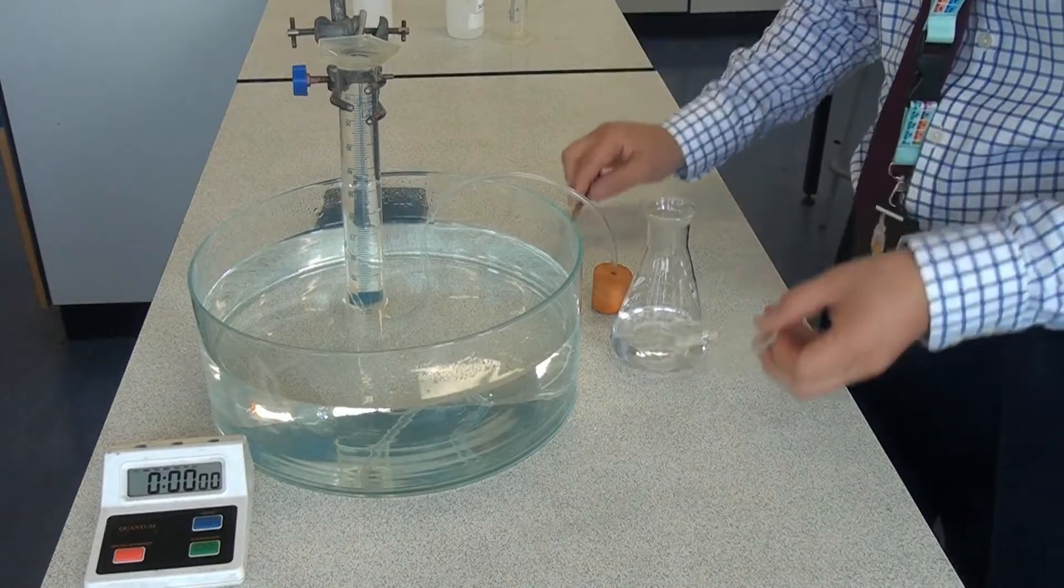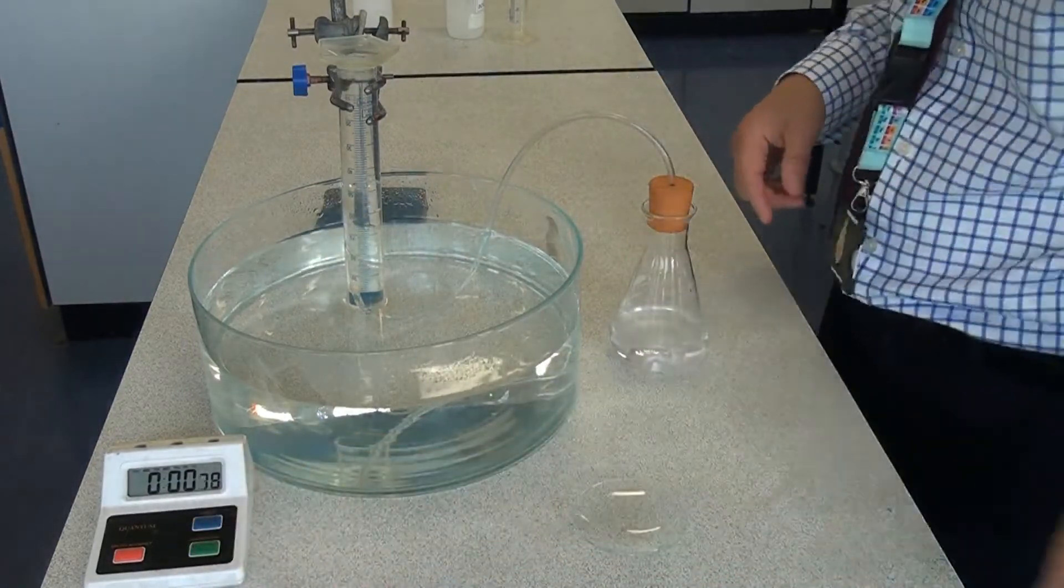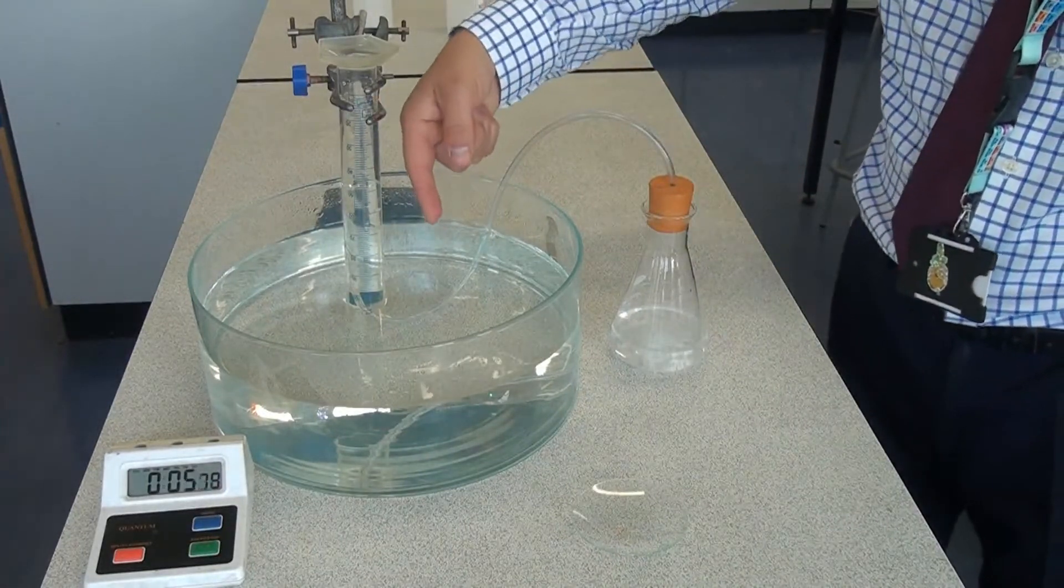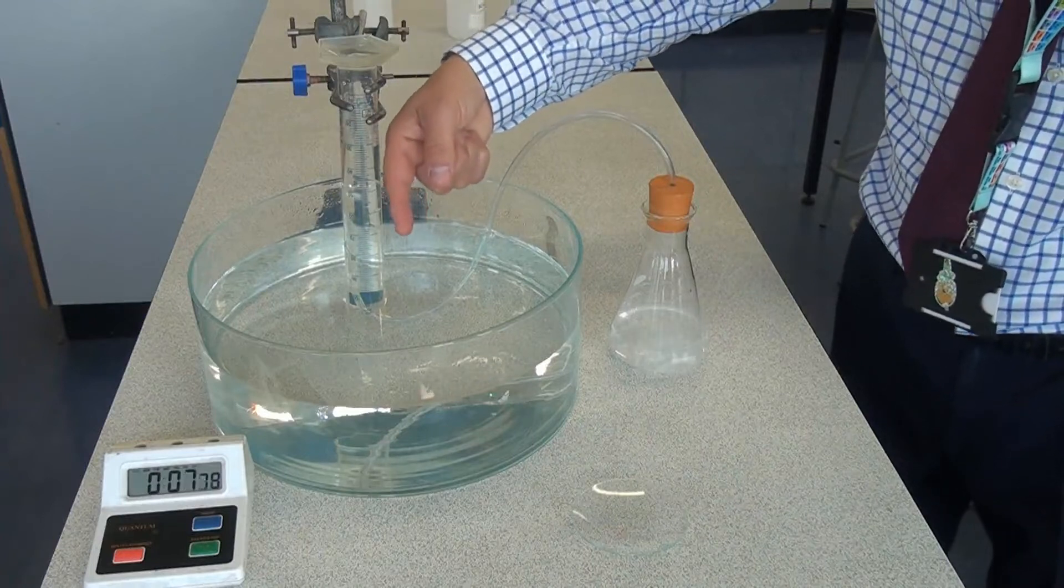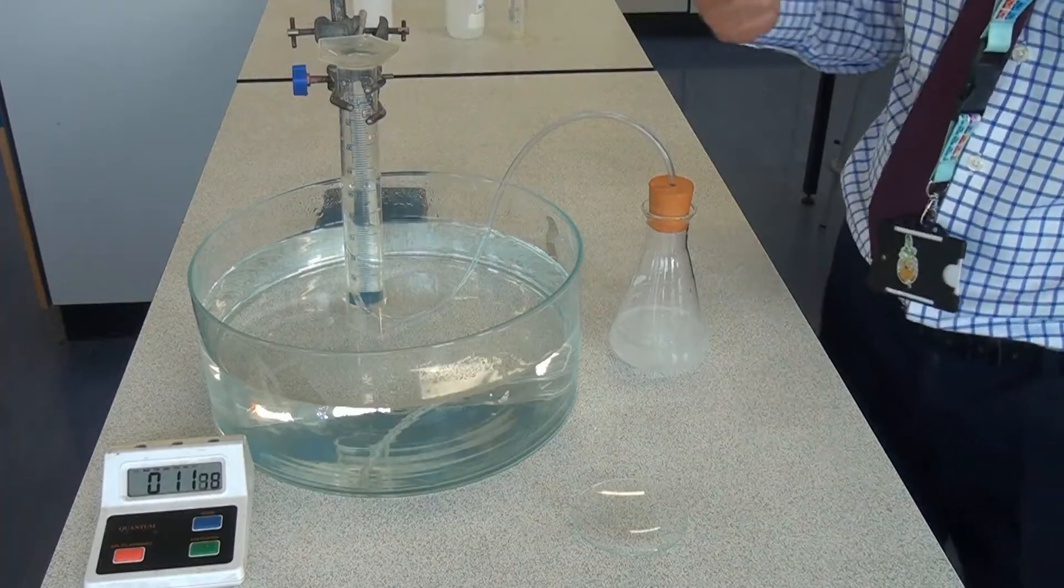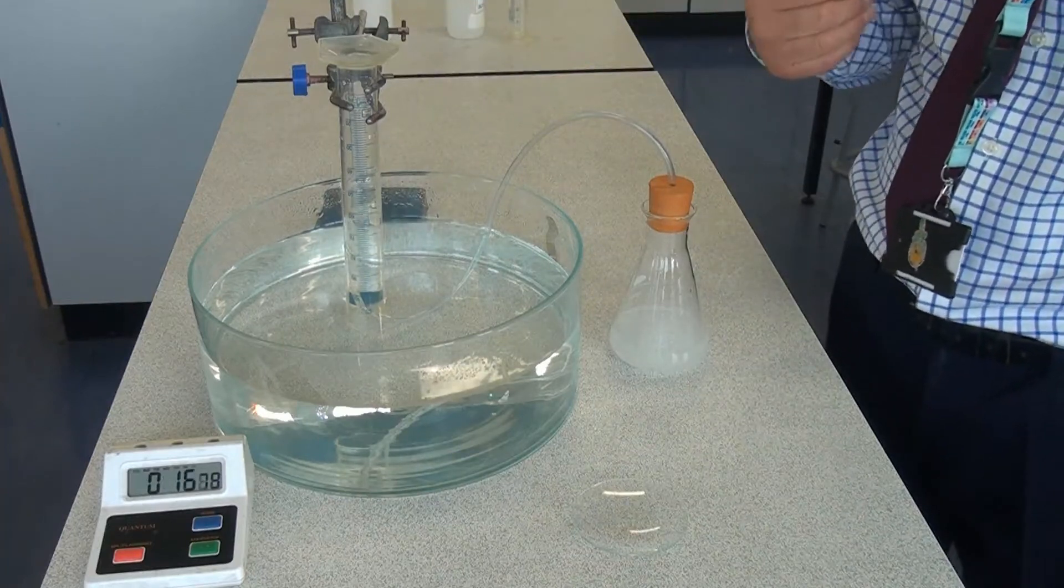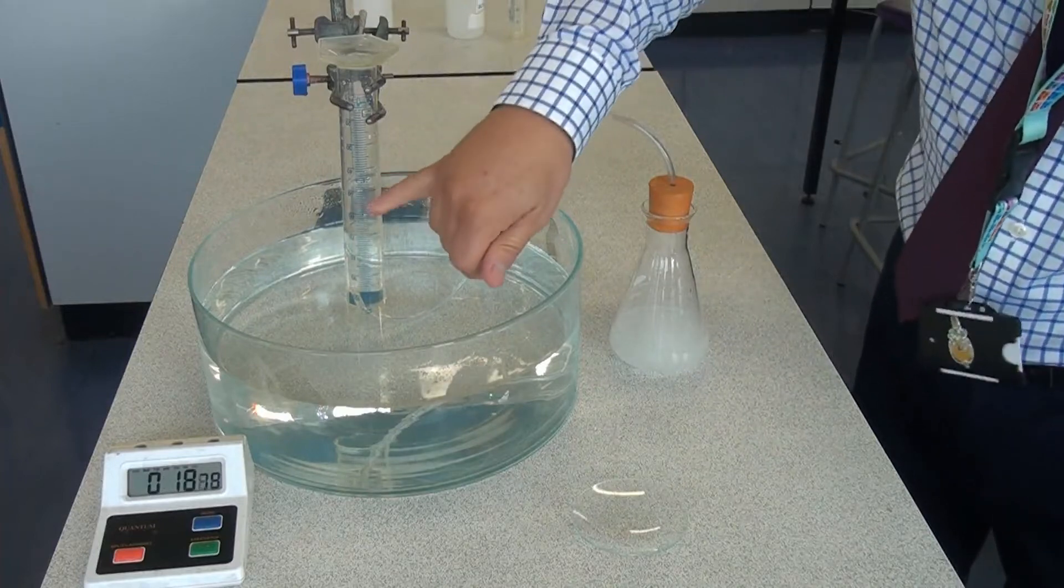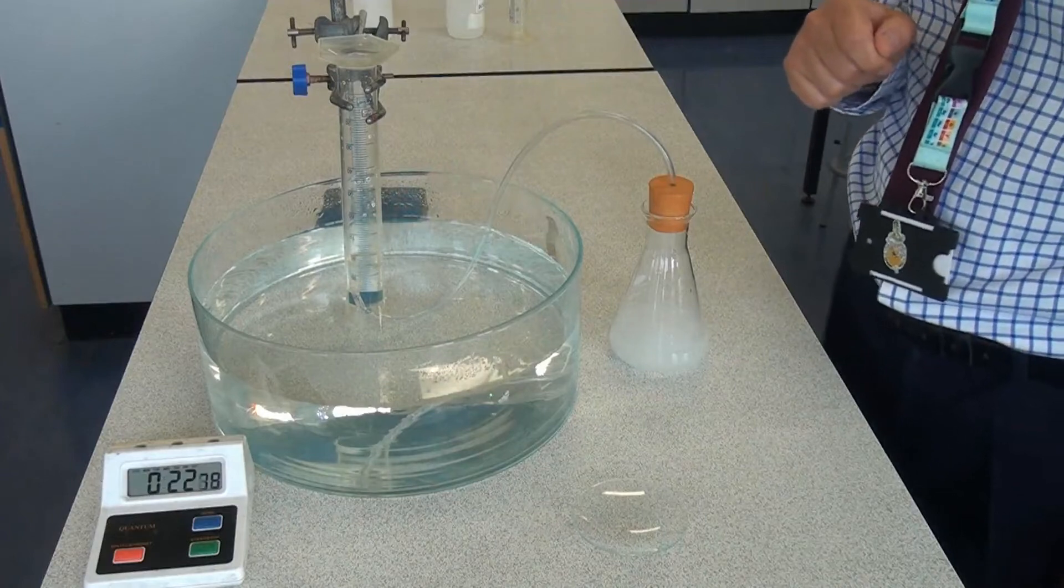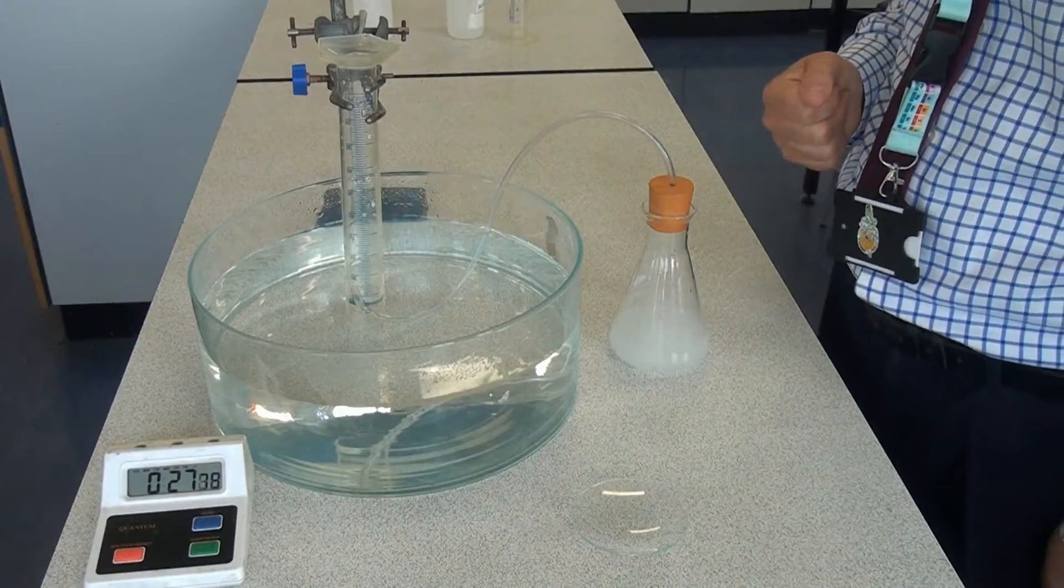So I would add the second reactant, put the bung back in, start the stopwatch straight away and as we can see, the gas has been generated, it's passing along the delivery tube and then bubbles of gas are forcing the water out of the measuring cylinder. It's displacing the water and then every 10 seconds or every 30 seconds, I would be able to read off the volume of gas that's been made by that time. Obviously, we need to do it at regular intervals, whether that's every 30 seconds or every minute.